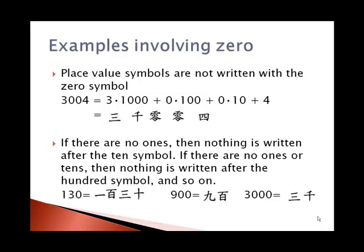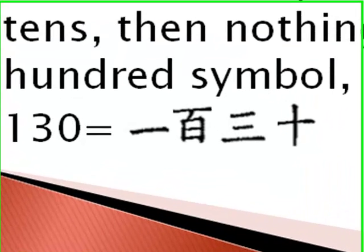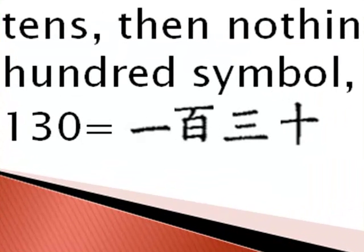If there are no ones at all, then we just end with the tens symbol. Like in one hundred thirty, we have symbols for one hundred, three, ten. Or one hundred three tens. No zero symbol at the end of that.